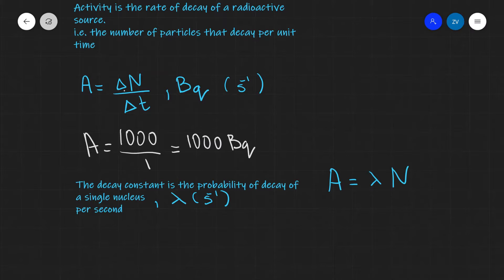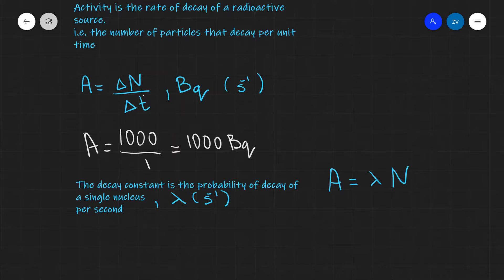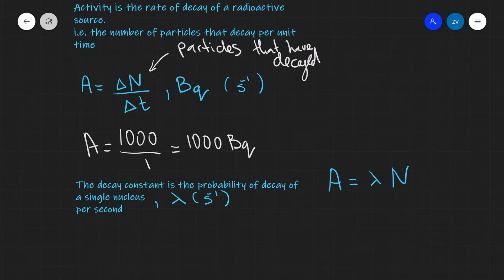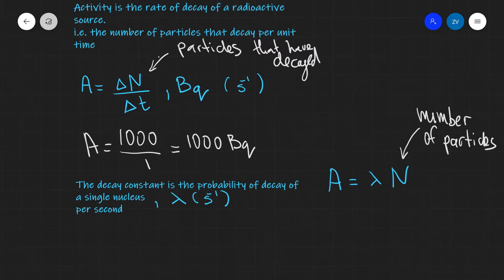Because the activity is equal to the number of particles that decay per second, and lambda is the probability of decay of a single nucleus, our activity A will be equal to the decay constant lambda times N, where N is the number of particles. Notice that in the earlier equation we had ΔN, the number of nuclei that have decayed. But in A = λN, N is simply the total number of particles — not the number that have decayed — giving us the activity at a particular time.